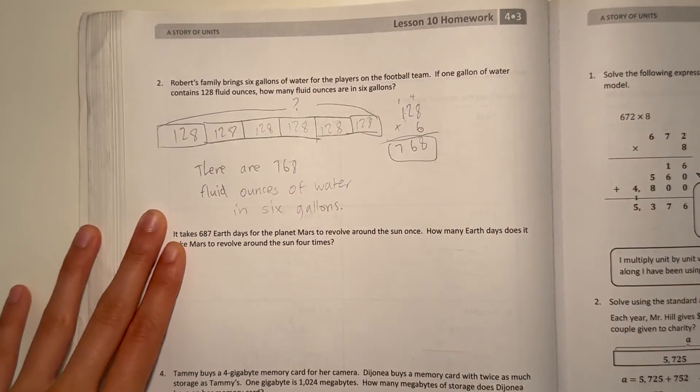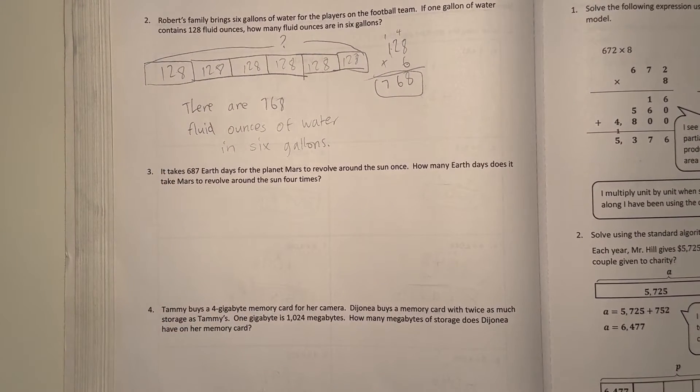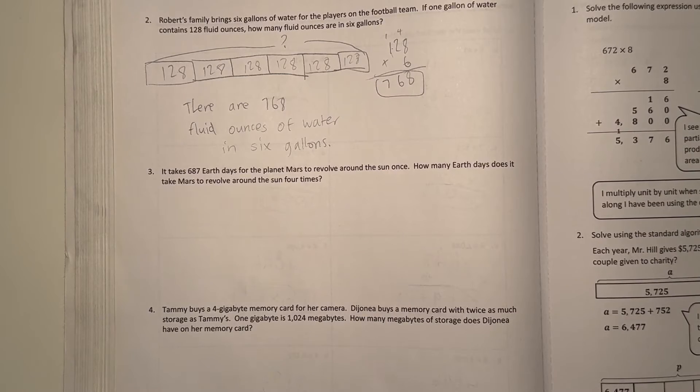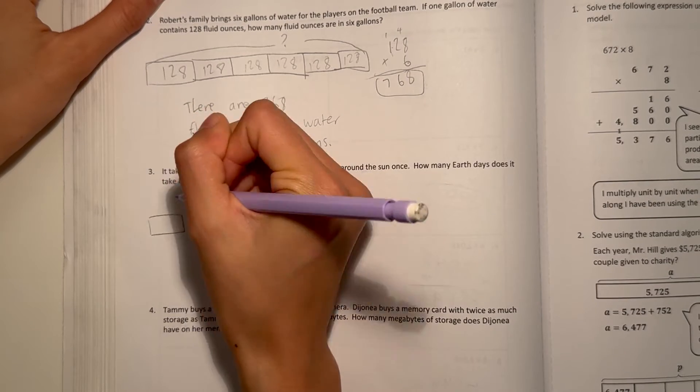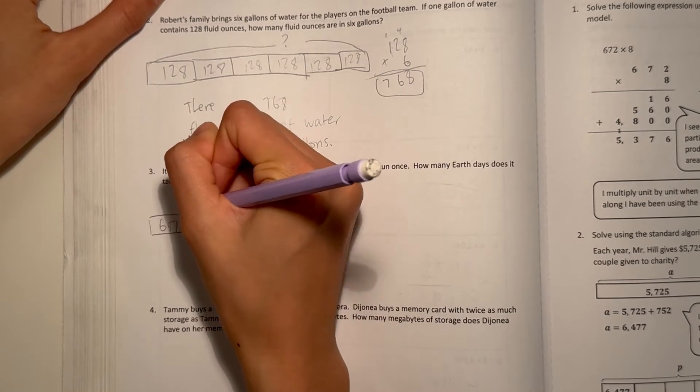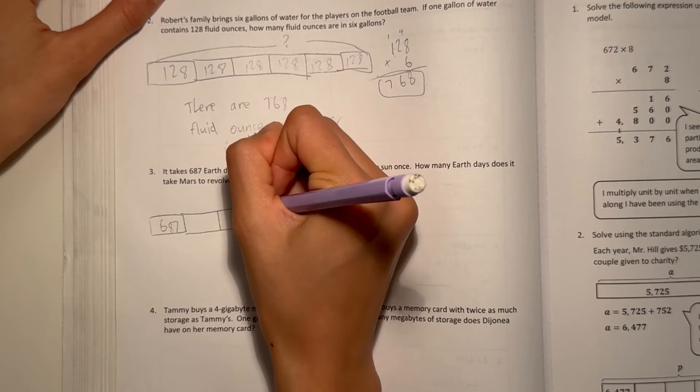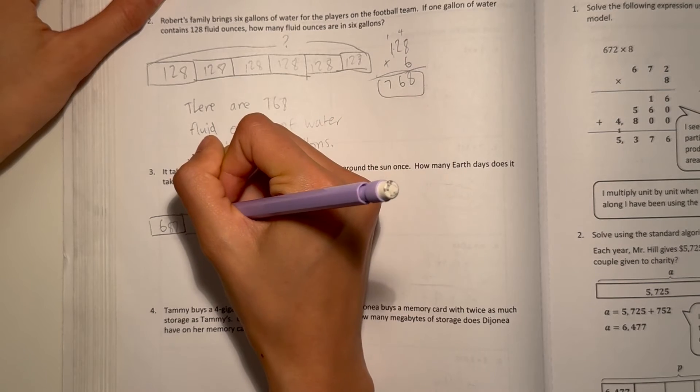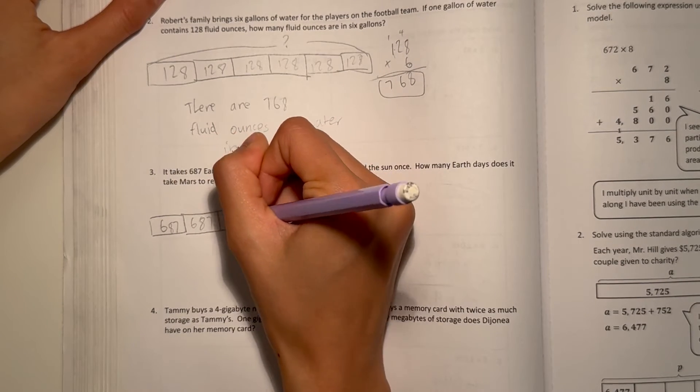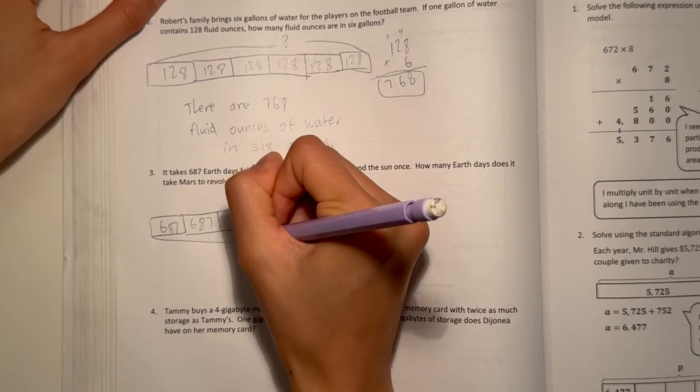Alright, number 3. It takes 687 Earth days for the planet Mars to revolve around the Sun once. How many Earth days does it take Mars to revolve around the Sun 4 times? So each time it revolves, it takes 687 Earth days. Now it's asking us, what about if it revolves around the Earth 4 times? Well, that would be 687 days each time. So what is the total number of days?